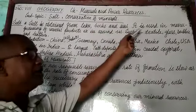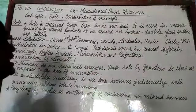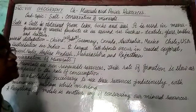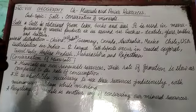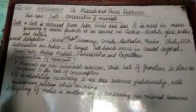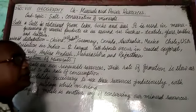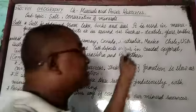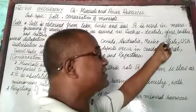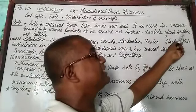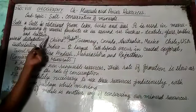Salt is used in manufacturing of various products we see around us. It is used in many industries such as the textile industry, glass industry, rubber industry, and leather industry.